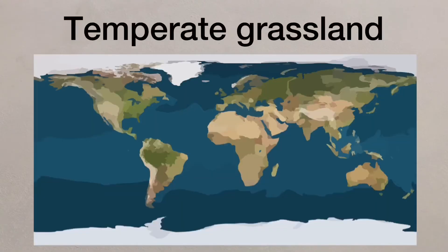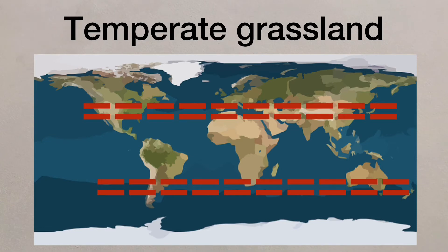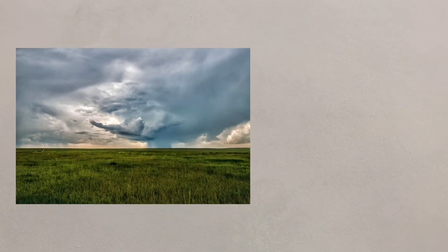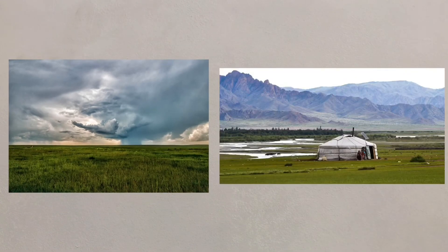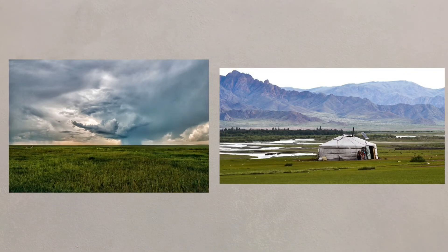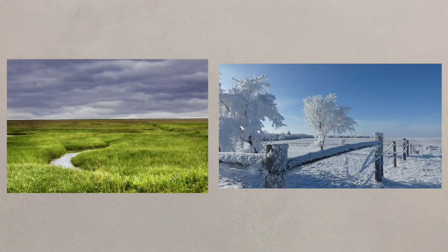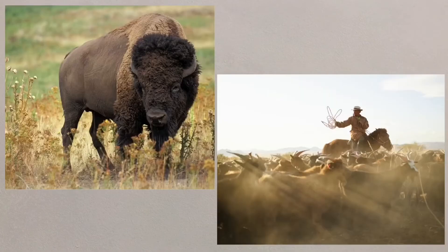Temperate grassland ecosystems are found 30 to 40 degrees from the equator and away from coastal areas. These areas, like the North American prairies and the steppes of eastern Europe, experience warm dry summers and cold winters. Grasses thrive in these conditions and the land is mainly used for grazing herds of animals.